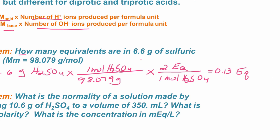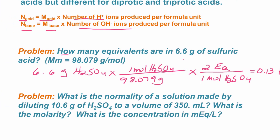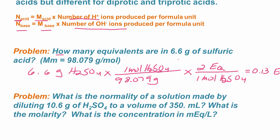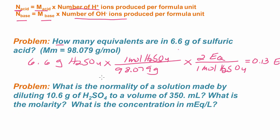Let's do problem number two here. So here we're asked what is the normality of a solution made by diluting 10.6 grams of sulfuric acid to a volume of 350 milliliters? What is the molarity? And then we're being asked what is the concentration of milliequivalents per liter?